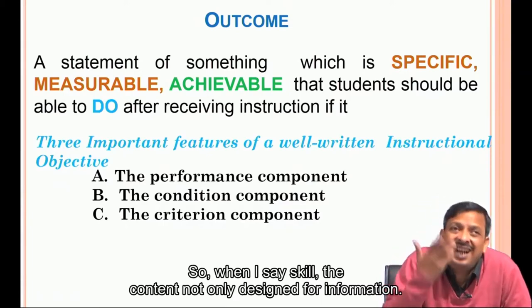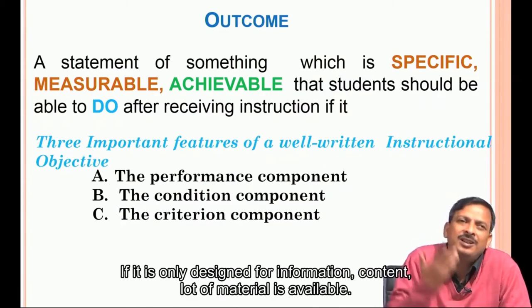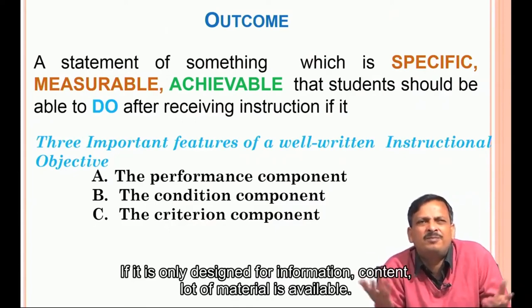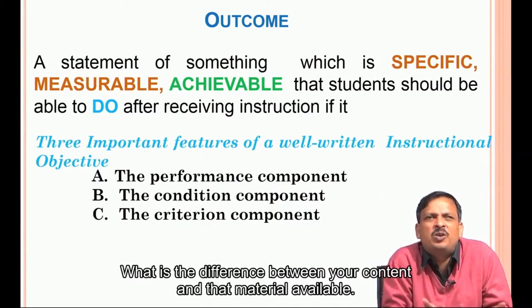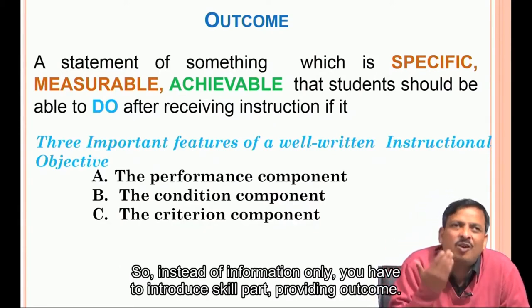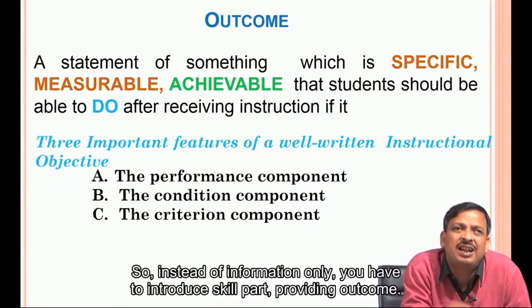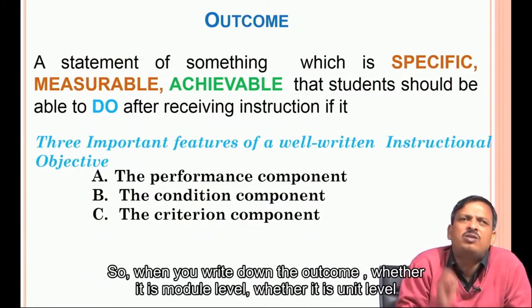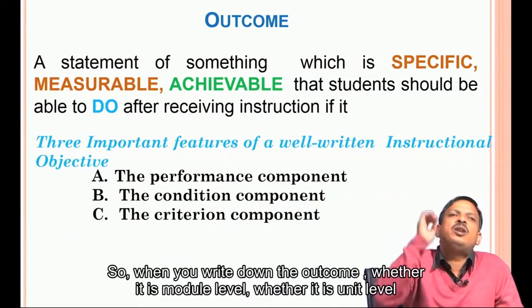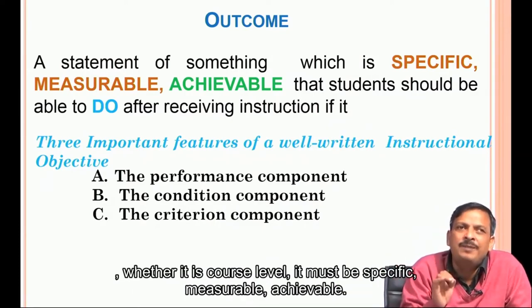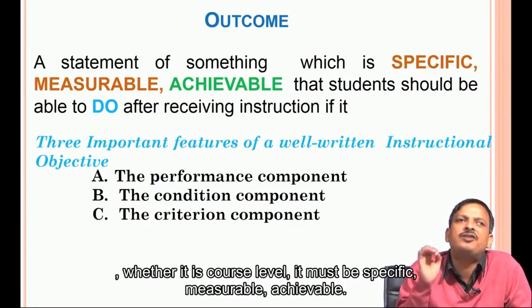When I say skill, a lot of material is already available. If your content is only designed for information, what is the difference between your content and that other material? So instead of information only, you have to introduce the skill part by providing the outcome. When you write down the outcome — whether it is module level, unit level, or course level — it must be specific, measurable, and achievable.